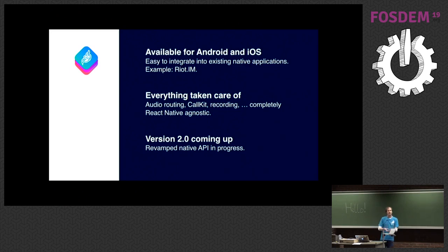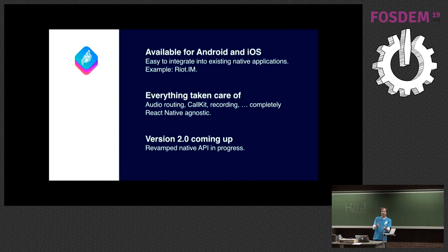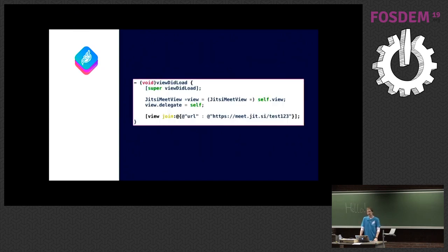All you have to do is integrate a single view and you get our entire experience — multiple participants, mute, unmute, all of it. This is very different from other APIs you get on mobile for these kinds of applications, which are always very low-level and require you to build the entire UI yourself. We give it to you for free, Apache 2 licensed. Applications like Riot.im from the Matrix team are already using it. Here's a quick iOS example: you get a hold of the view, call join on it, pass a URL, and Bob's your uncle.